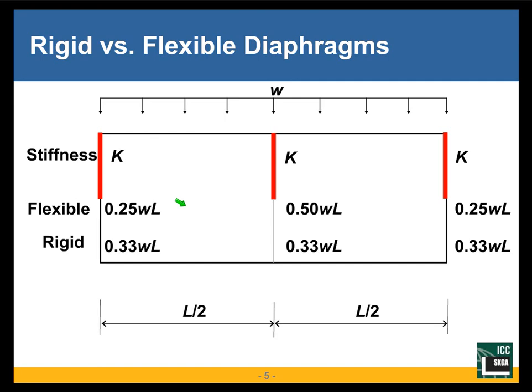This is a diaphragm supported on three different shear walls shown in red. The shear walls are of equal lateral stiffness K — it takes the same amount of lateral force to impart one unit of lateral displacement to these shear walls. So the stiffnesses are the same. These are the seismic forces.